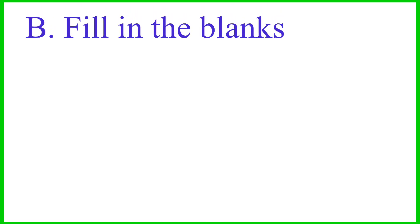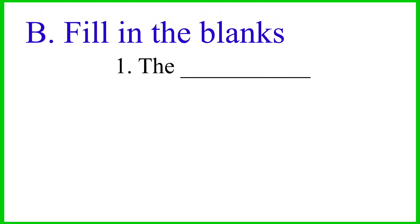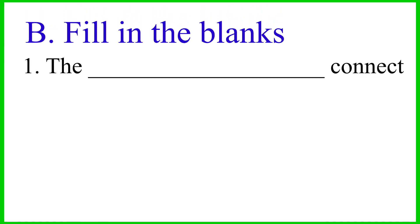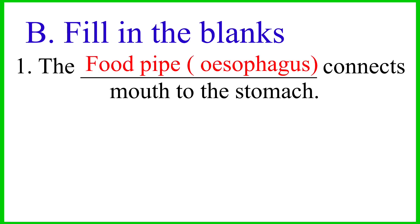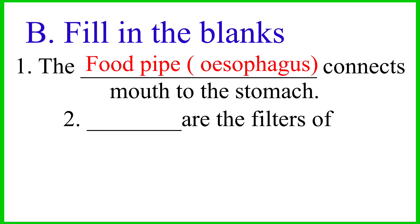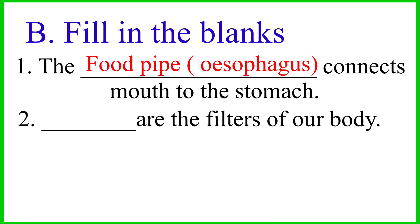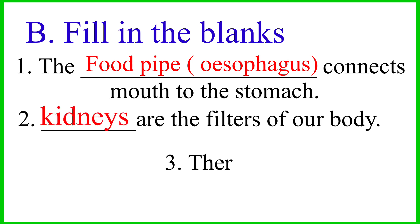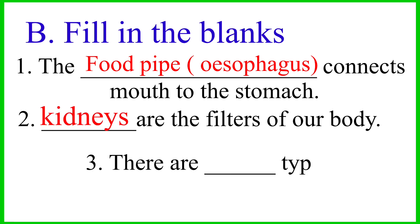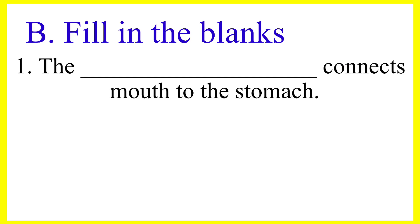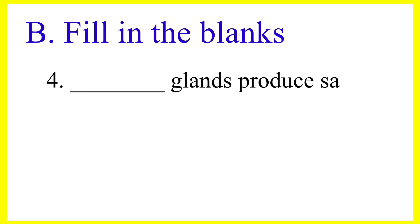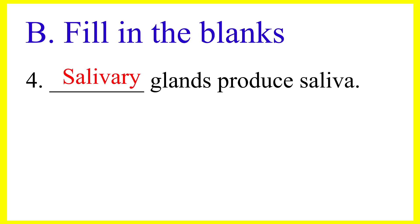Fill in the blanks. The blank connects mouth to the stomach — esophagus. The blank are the filters of our body — kidneys. There are blank types of teeth in our mouth — 4. Blank glands produce saliva — salivary.